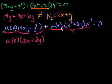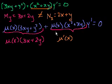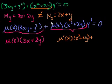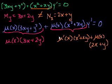For the partial of the new N with respect to x, we use the product rule. The derivative of mu(x) with respect to x is mu'(x), so we get mu'(x) times (x² plus xy), plus mu(x) times the derivative of (x² plus xy) with respect to x, which is 2x plus y. For this new equation to be exact, these two expressions must be equal to each other.